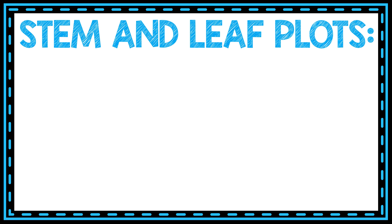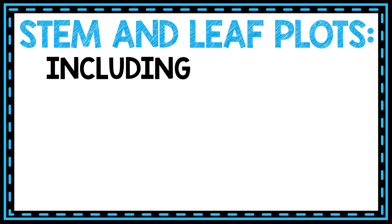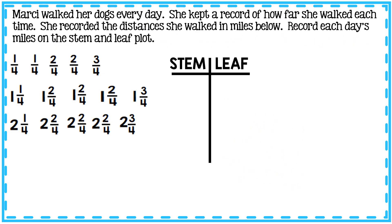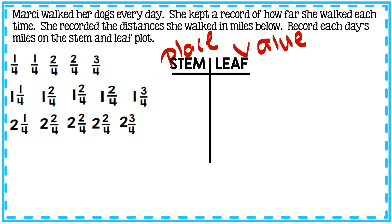Hello and thank you for watching. Today's video is going to be about stem and leaf plots including fractions. It's important to remember that stem and leaf plots organize numbers by their place value. When it comes to fractions, the whole number will go on the stem side and the fraction part will go on the leaf side.